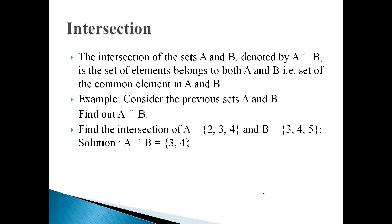Second example, the intersection of A, here the elements of A are 2, 3, 4 and the set B elements are 3, 4, 5. So the intersection of A and B is 3, 4. Why? Because 3 and 4 both elements are common in both sets. So the answer is 3, 4 for the intersection of A and B.